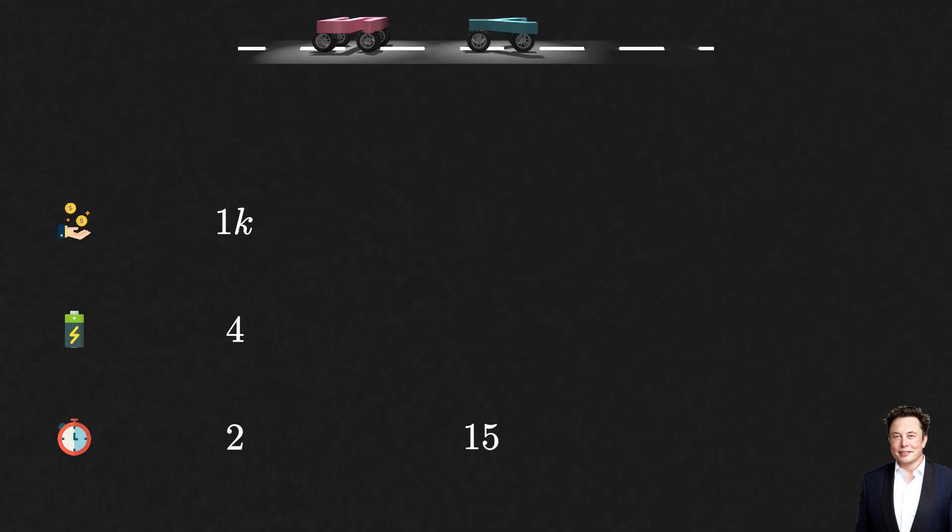and a Model Y that requires 15 days to be made, eight battery units, and has a profit margin of 5k. If you are given one year and a stock of 500 battery units, how would you go about maximizing this company's profits?